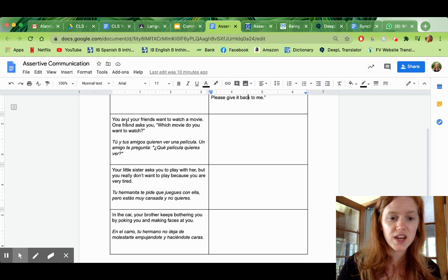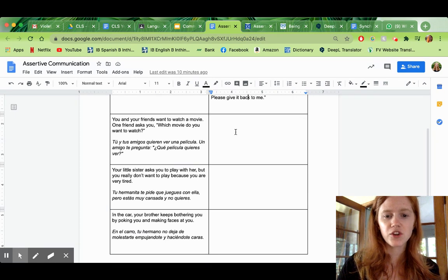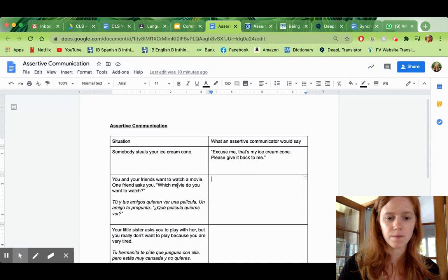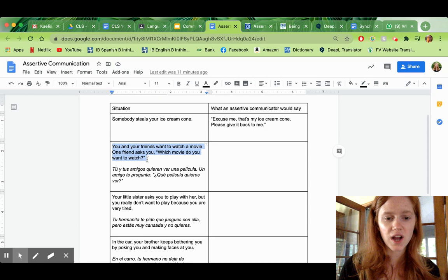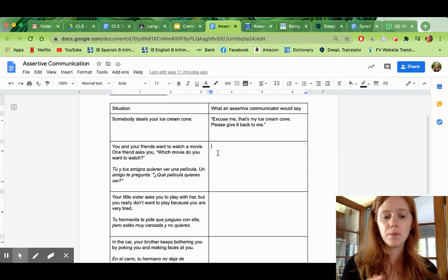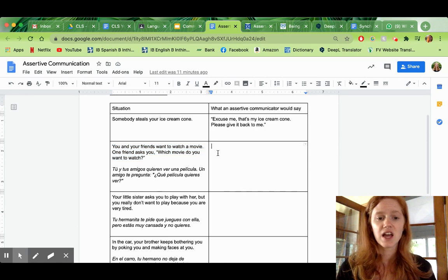So, what you're going to do is you're going to read these examples. They're in English and Spanish. And you're going to write what an assertive communicator would say. You and your friends want to watch a movie. One friend asks you, which movie do you want to watch? You know, maybe a passive communicator would say, oh, I don't care.